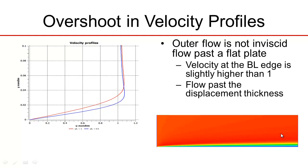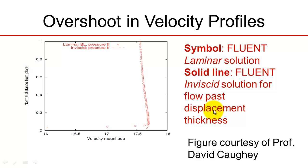Then the velocity has to decay back to 1 farther out, and that's what you're seeing. The velocity at the boundary layer edge is slightly higher than 1 because the outer flow is actually the flow past the displacement thickness. You can show this formally using second-order boundary layer theory, as my colleague Professor David Coy verified.